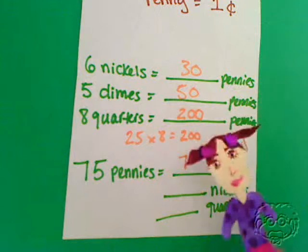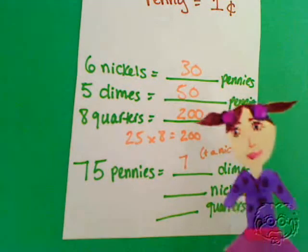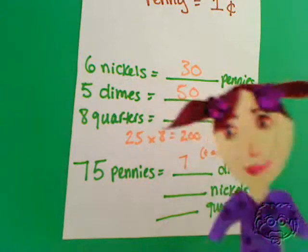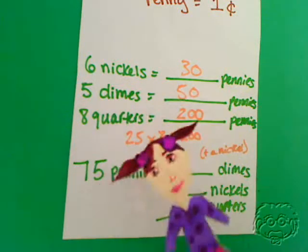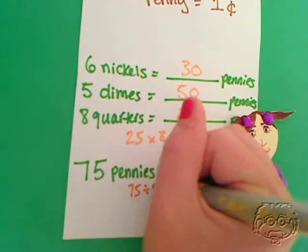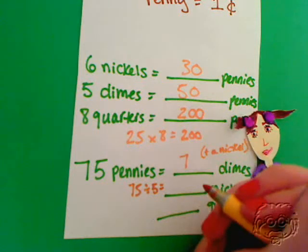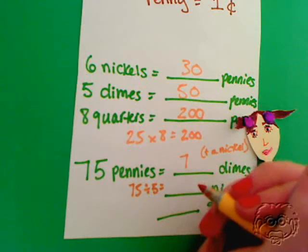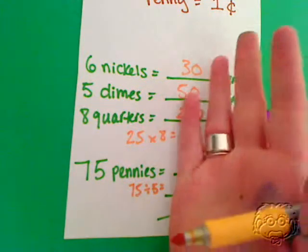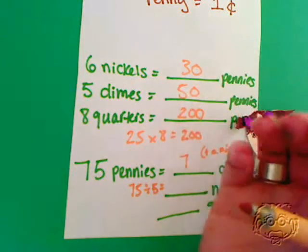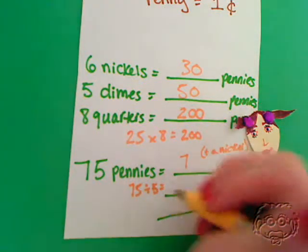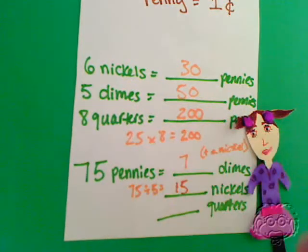For nickels, it'll be a little easier. A nickel is worth 5 cents, so we're going to divide 75 by 5. Let's count by 5: 5, 10, 15, 20, 25, 30, 35, 40, 45, 50, 55, 60, 65, 70, 75 — that's 15. So 15 nickels is equal to 75 pennies.